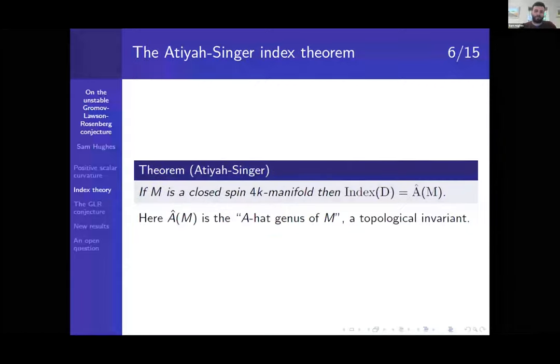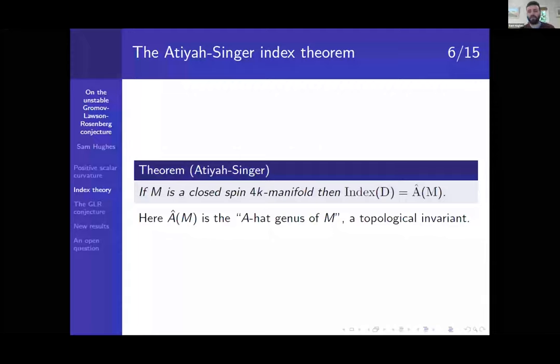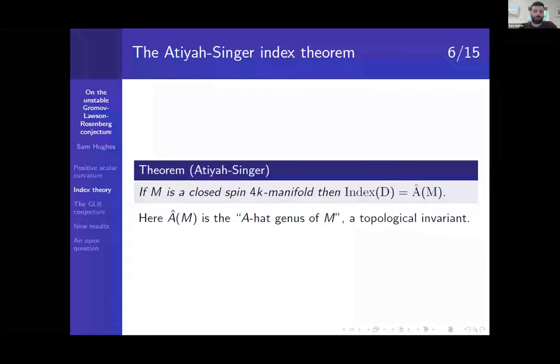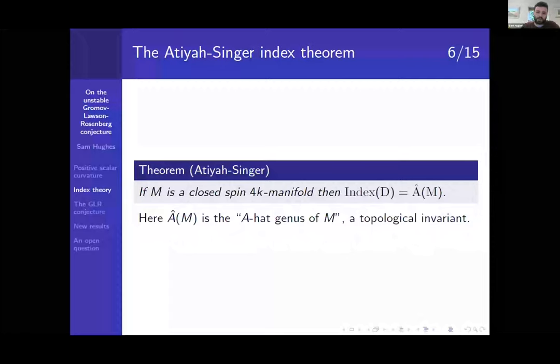So quite a famous result due to Atiyah-Singer is the Atiyah-Singer index theorem, which states that if M is a closed spin 4k manifold, then the index is equal to this Â hat genus of the manifold. Now, this is some quite high-powered topological gadget which you get out of the characteristic classes in the cohomology of M. But the point is, is it something you can compute? If you're given like a CW structure on a manifold, you can just sit there and you can, in principle, you can work out what this thing is. You can just sit down and compute it, and then you know whether you're going to admit positive scalar curvature or not. Admittedly, it's a lot harder to compute than the Euler characteristic, but it is computable. So that's kind of what we want. We want something which is very canonical to the topology of the space and not to the geometry.